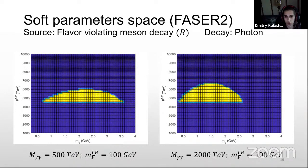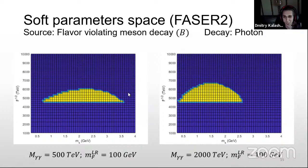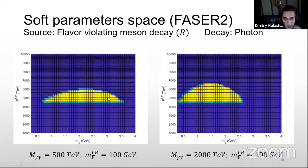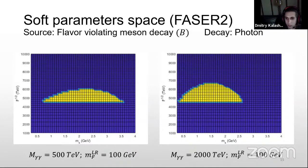I also present decays in a larger space of sgoldstino mass. In this mass area, the main source of sgoldstino — the most promising one — is a B-meson decay, because the B-mesons are quite light relative to this mass scale.